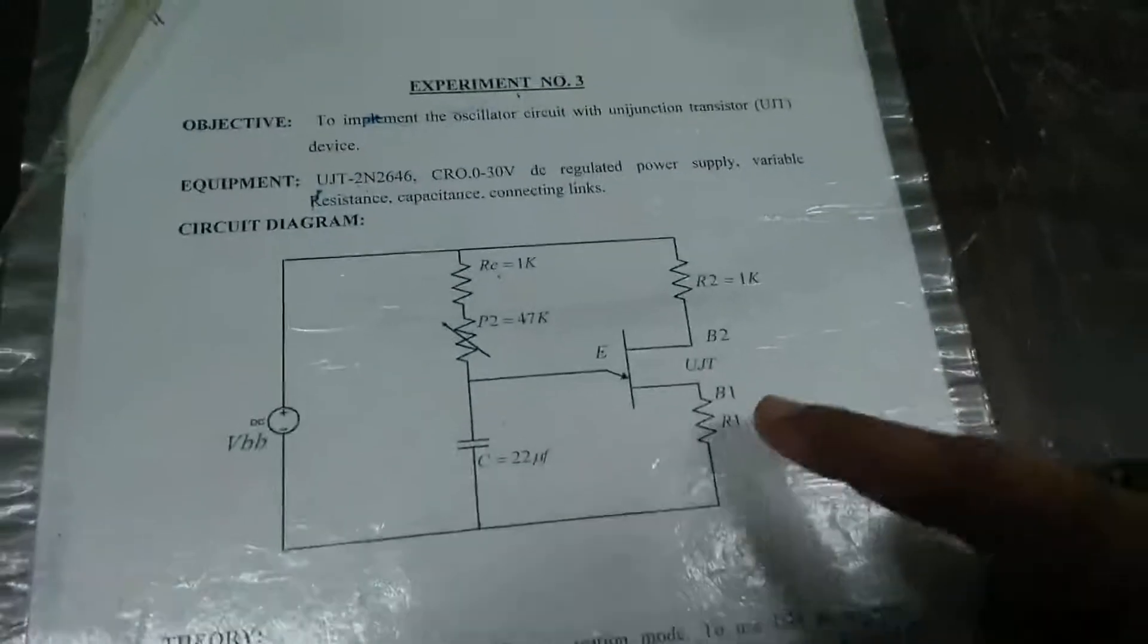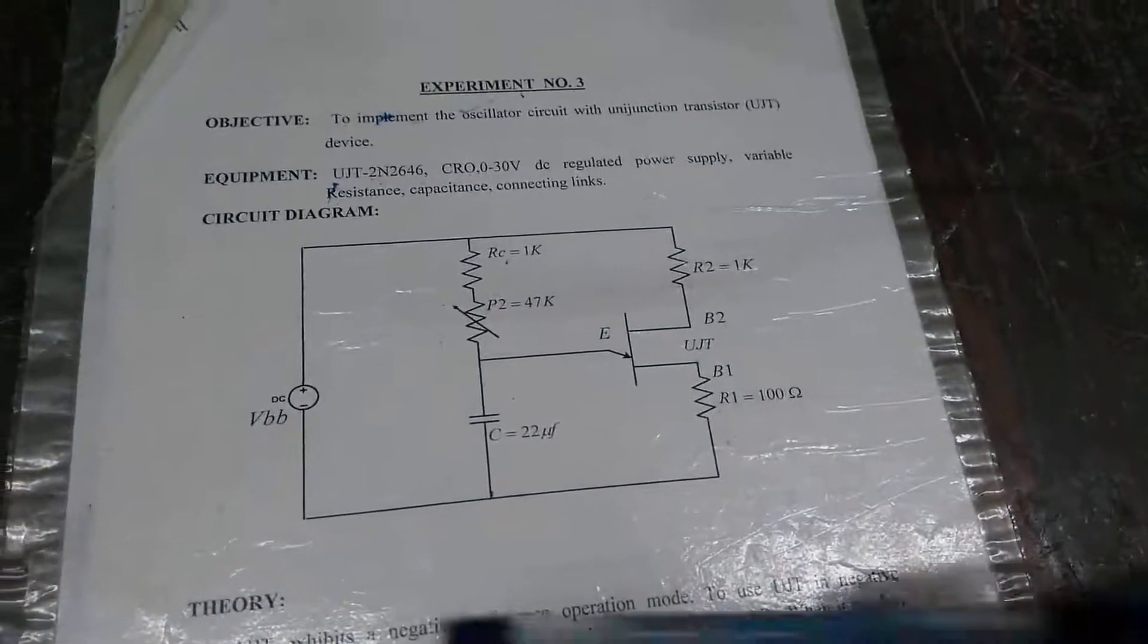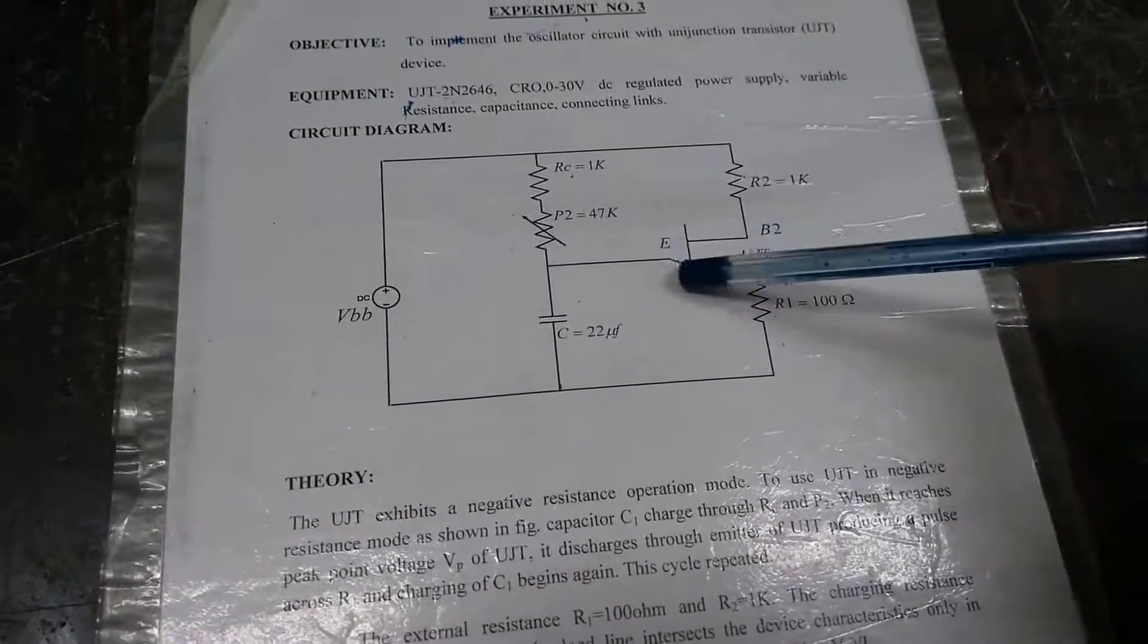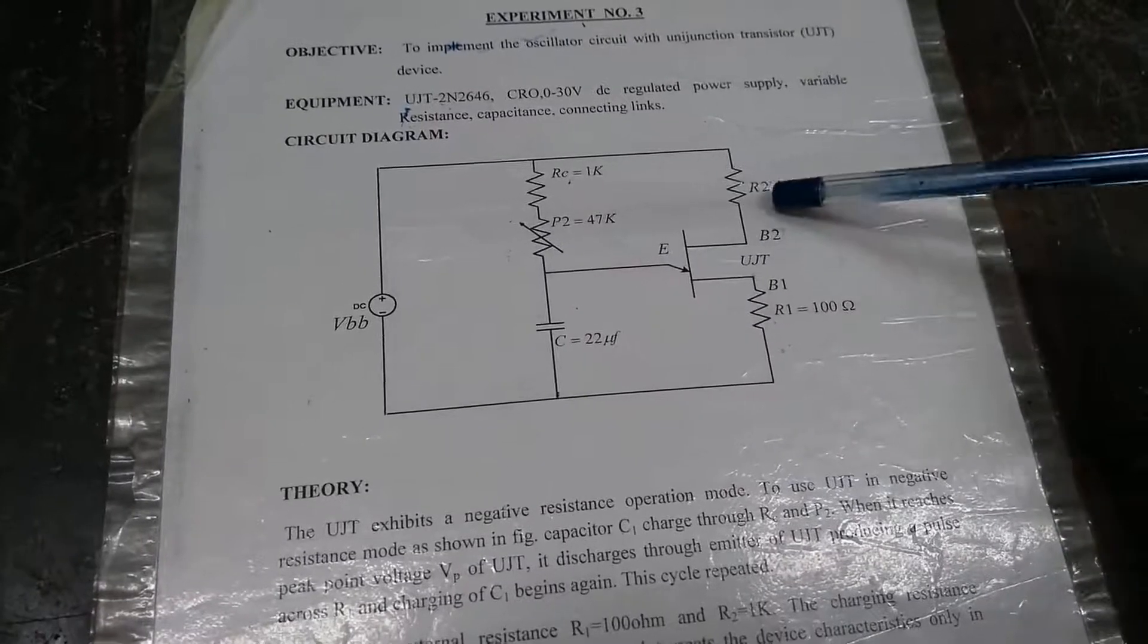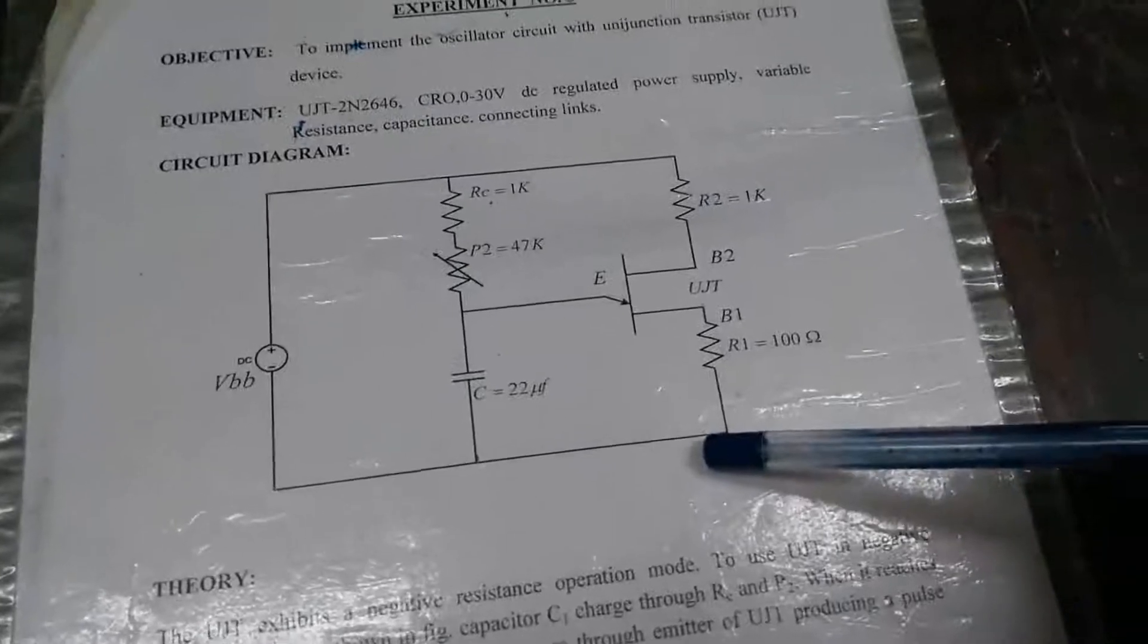Now, here first of all I want to show this schematic circuit diagram for the UJT. Here we have provided the DC supply. This is our UJT symbolic diagram where this terminal is emitter, base 2 terminal and base 1 terminal, and these are the components connected with the UJT.